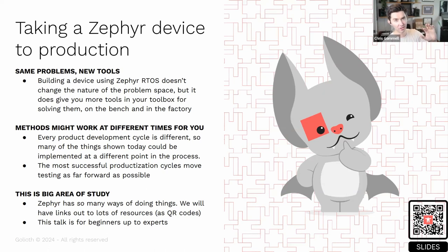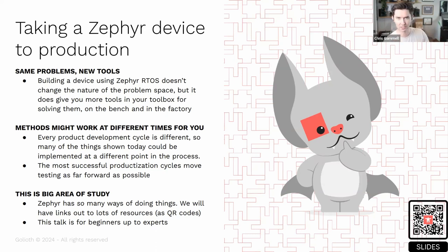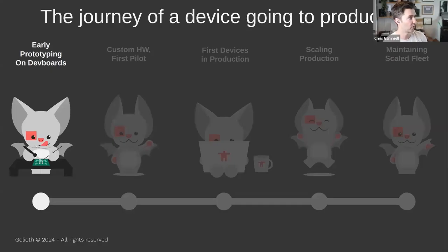Because this is such a big area of study, I'm going to have a ton of QR codes throughout. You can also download these slides — in the lower right there. A lot of what Goliath does is content around Zephyr, so there are references back to that content for more depth — not just Goliath content, but also Zephyr docs, Nordic docs, and a lot of the resources I use on a daily basis.